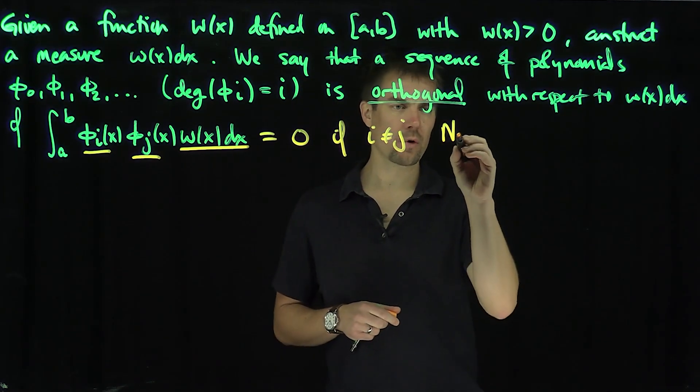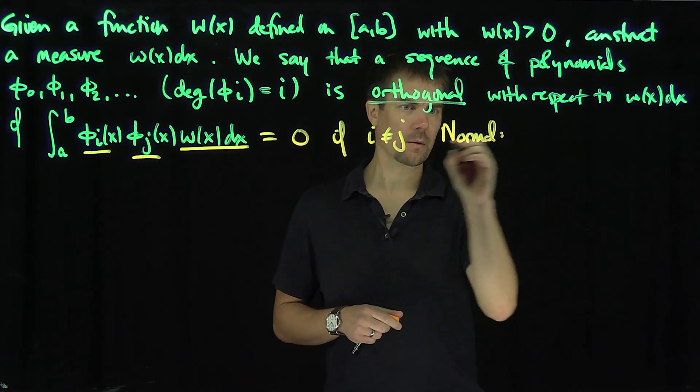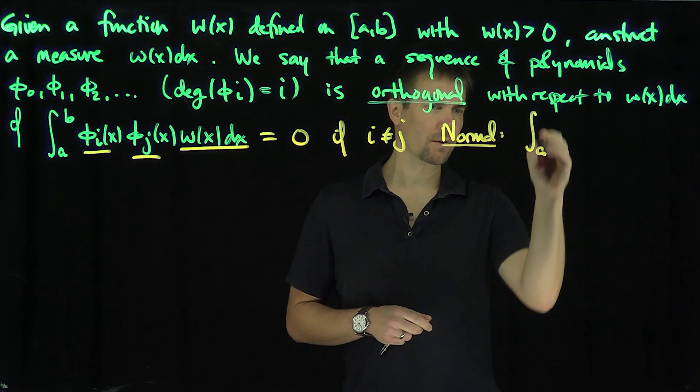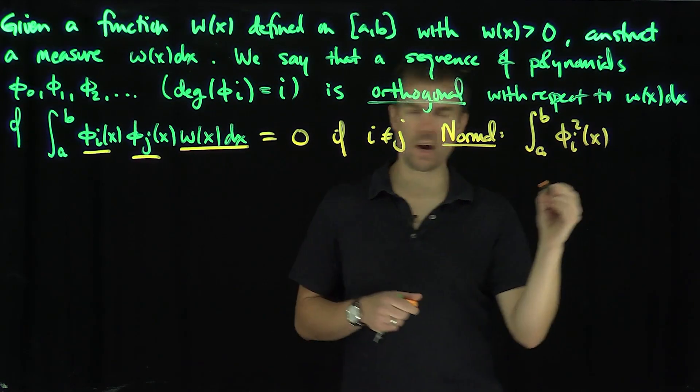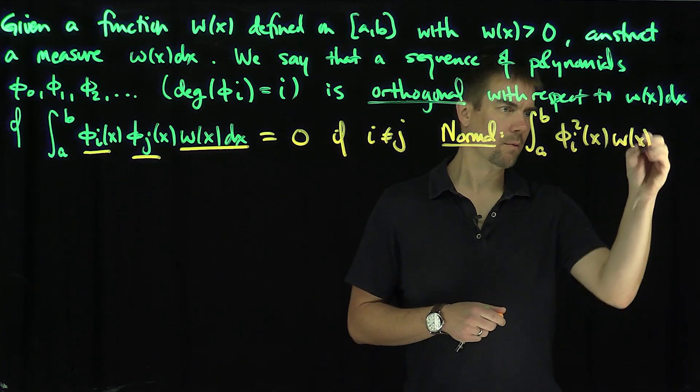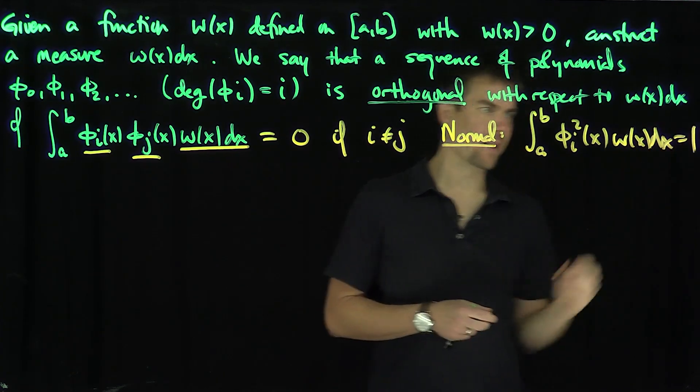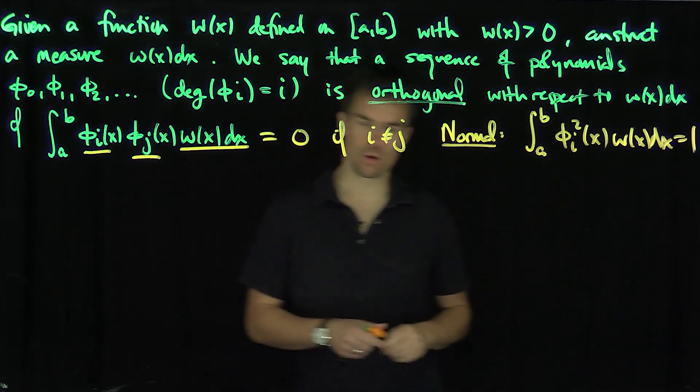Furthermore, we'll call it normal if when we do this, the integral from a to b of φᵢ²(x)w(x)dx equals one. That's the normalization condition if we choose it to be normal.